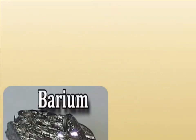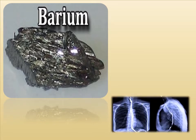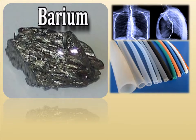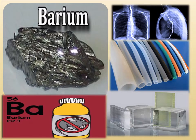Another element that we usually encounter in our daily life is barium. Barium can be used in x-ray processes. It can also be used in creating sturdy rubber, in creating sturdy glasses as well, and also barium can be used to kill rats.